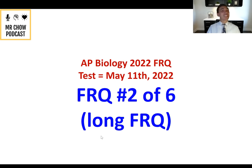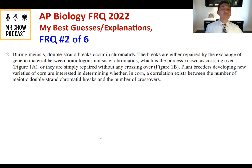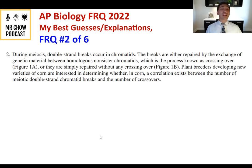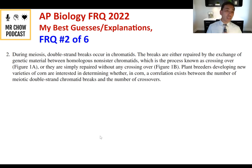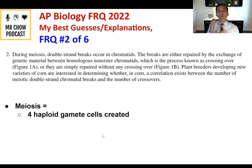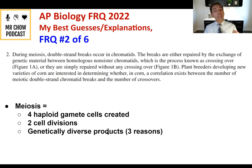FRQ number two — another long one. During meiosis, double strand breaks occur in chromatids. The breaks are either repaired by exchange of genetic material between homologous non-sister chromatids — crossing over (figure 1A) — or repaired without crossing over (figure 1B). Plant breeders developing new varieties of corn want to determine whether a correlation exists between the number of meiotic double strand breaks and the number of crossovers.